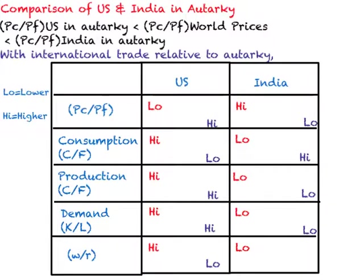In India, wages were lower and rent was higher in autarky. When India starts to produce more and more food, primarily for export production, the demand for labor will increase. When demand for labor increases, wages will go up. Rent in India will start to fall. So wages divided by rent will become higher in India with international trade relative to autarky. This gives us the implications when these two countries engage in foreign trade relative to autarky.